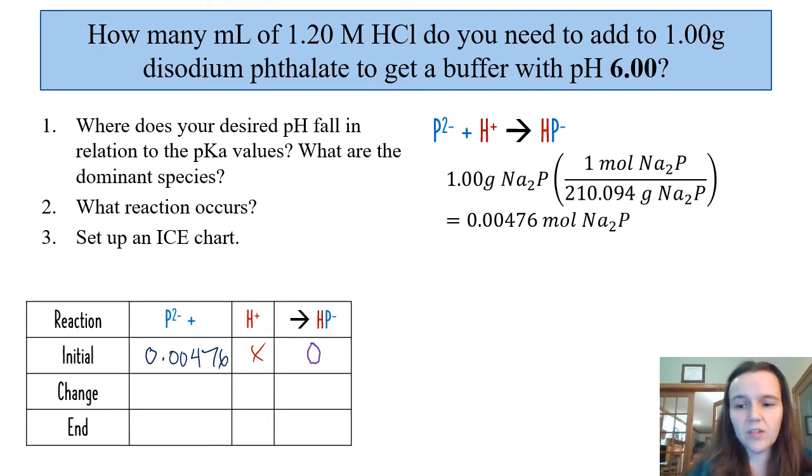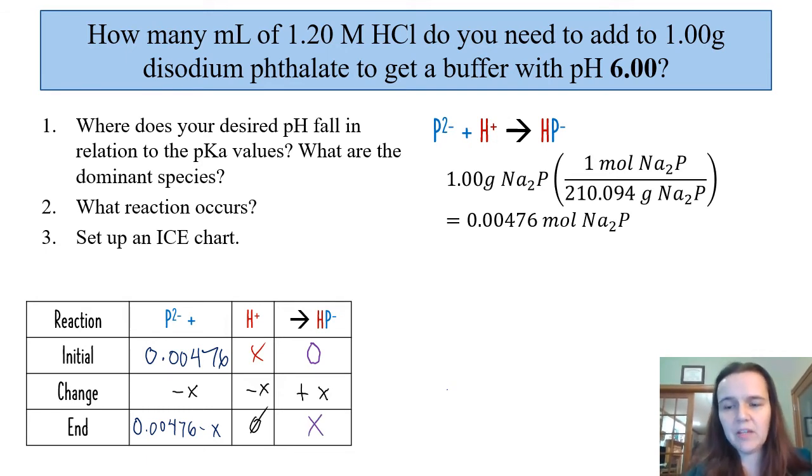That's because we're using a disodium phthalate compound to create this solution, and we have a pretty small amount of the HP- that naturally is generated. The change due to the reaction, we're going to lose x of both the P2- and the H+, and we're going to gain x of the product of HP-. Therefore, ultimately, our P2- is going to be 0.00476 minus x from this reaction, and we're going to have an amount of x of the HP- present.